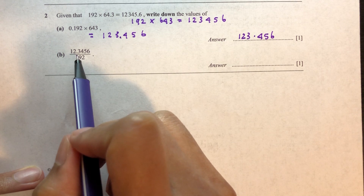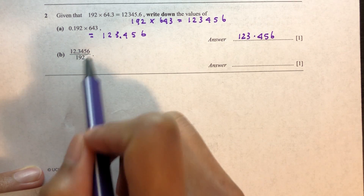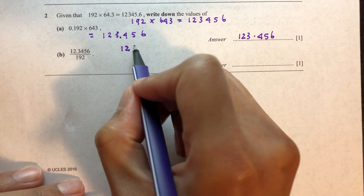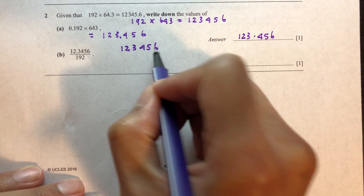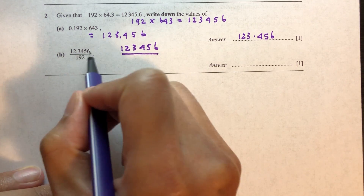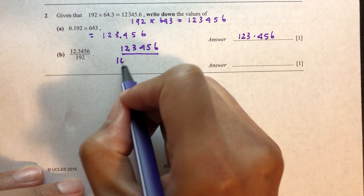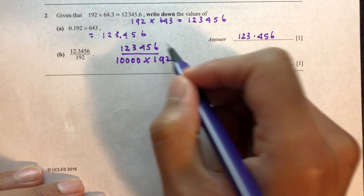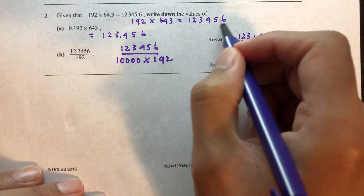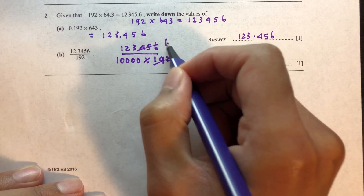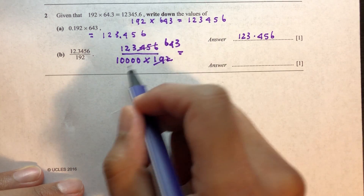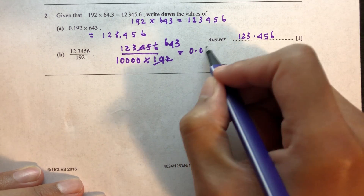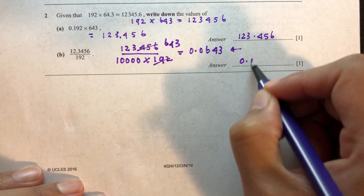For the next part, we have 12.3456 over 192. We can take out the decimal place — moving four places gives us 123456 times 10 to the power of minus 4, divided by 192. We know 192 times 643 equals 123456, so 123456 divided by 192 is 643. The answer is 643 divided by 10000, which is 0.0643.